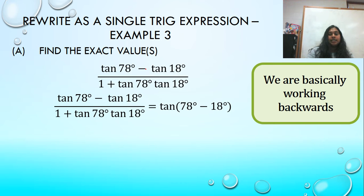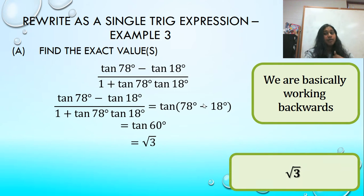As long as you recognize which identity this is, this happened to be the difference identity for tan. And then I can say 78 minus 18 is 60 degrees. I can solve tan of 60 degrees. That's on the unit circle. So I finished the solve and that would be our answer.